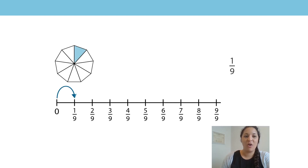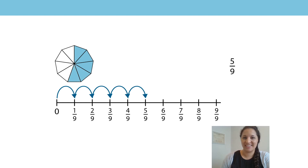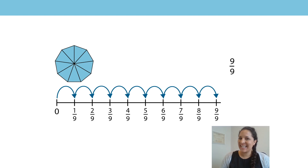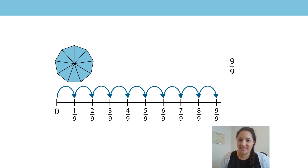Let's count up in unit fractions of one-ninth. Off we go: one one-ninth, two one-ninths, three one-ninths, four one-ninths, five one-ninths, six one-ninths, seven one-ninths, eight one-ninths, nine one-ninths. Well done. Now let's count up in non-unit fractions. Remember to start from zero. Are you ready? Zero, one-ninth, two-ninths, three-ninths, four-ninths, five-ninths, six-ninths, seven-ninths, eight-ninths, nine-ninths.